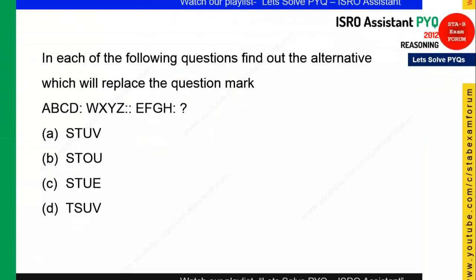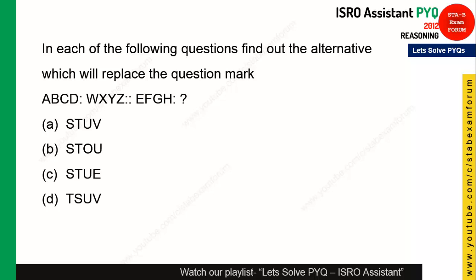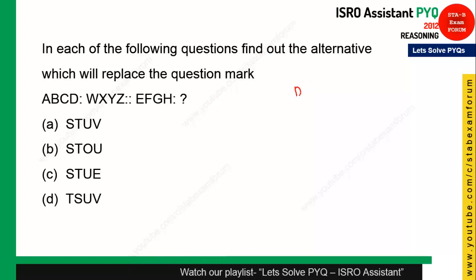The first question is on your screen and your time starts now. This question is from the category called coding-decoding, plus analogy. They have coded a word in a certain way and you need to make a similar pattern for the given word.